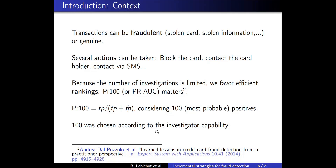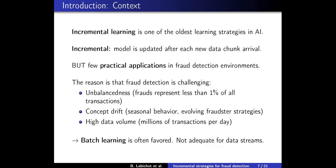Now we will discuss incremental learning for fraud detection. The idea is to continuously update our model after each new data chunk arrival. This setting is clearly underrepresented in the fraud detection literature, and the reason is that fraud detection is a challenging problem: it exhibits class imbalance — fraud represents less than one percent of transactions — concept drift, seasonal behavior such as during the Christmas period, and fraudsters tend to invent new strategies over time. Also, the amount of data to process is high, with millions of transactions per day. Because of this, batch learning is often favored, but as we will see, it is not optimal.